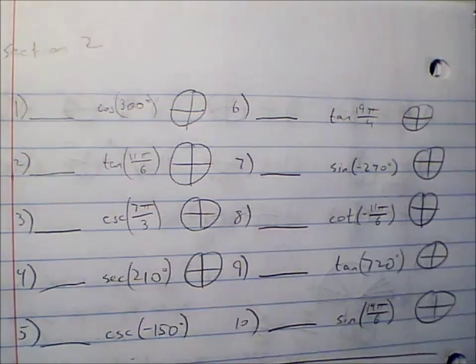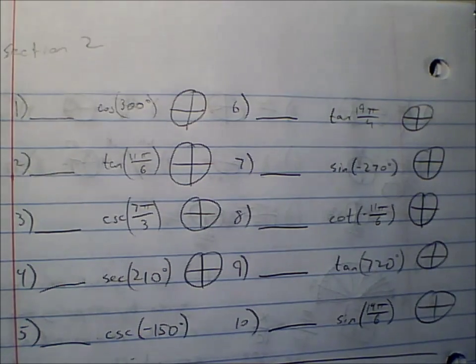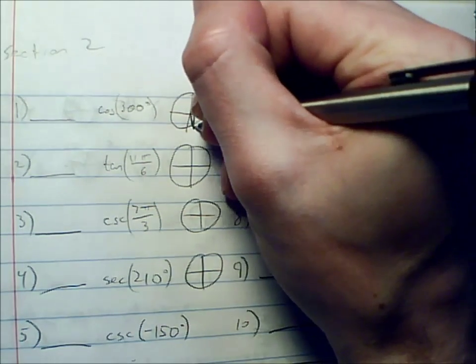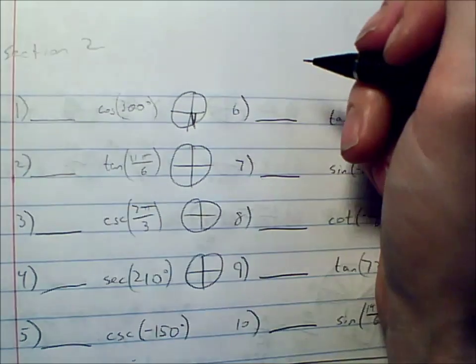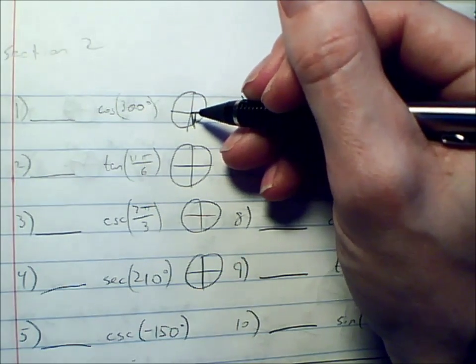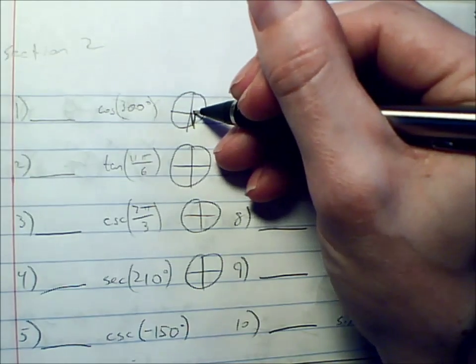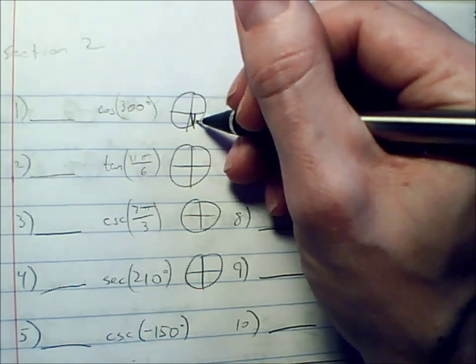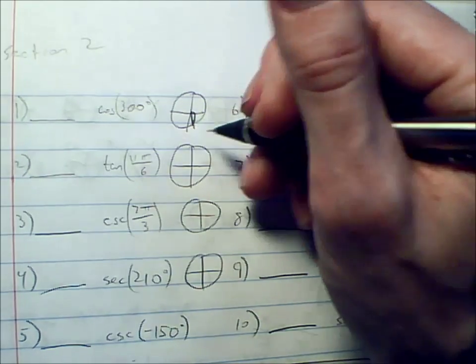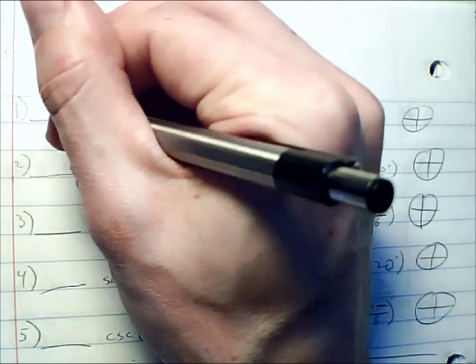Let's start with cosine of 300 degrees. First, find 300 degrees - it's just past 270, right there. Now connect it to the x-axis to make a triangle. Cosine is the x value. This is a 30-60-90 triangle with a long and a short side. The x value would be the short one, and the short side of a 30-60-90 is always 1 half.